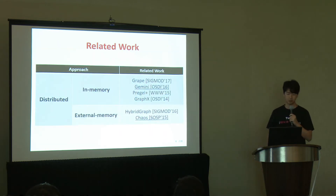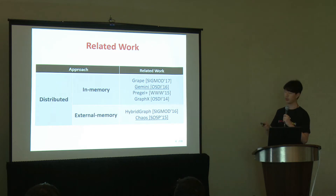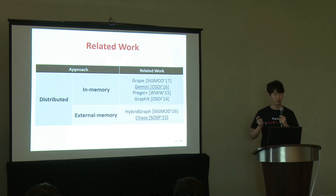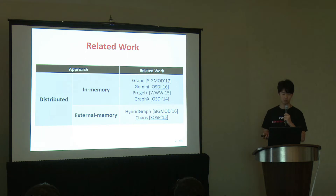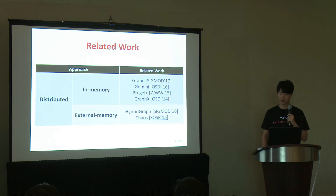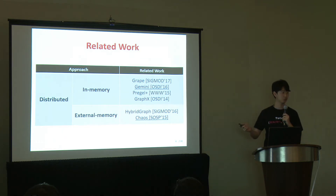Distributed methods are categorized into two types: in-memory and external memory. While the in-memory system focuses on efficiency but with a risk of out-of-memory error, the external memory system focuses on scale-up with a fixed memory budget but with a sacrifice in performance. Gemini and Chaos are the state-of-the-art in each group.